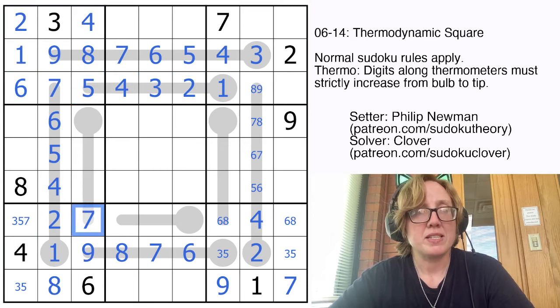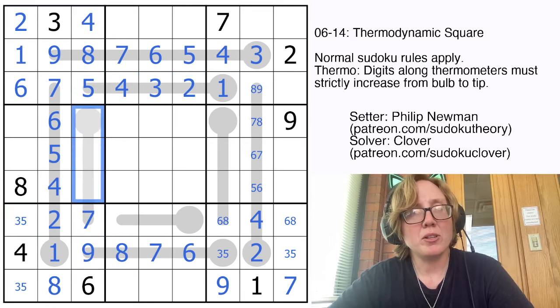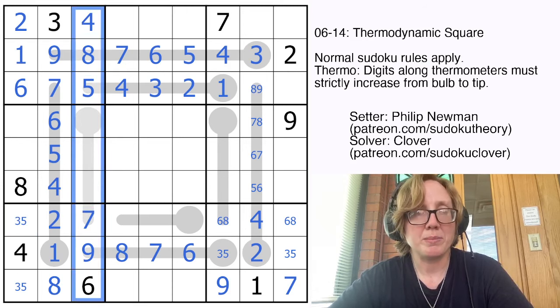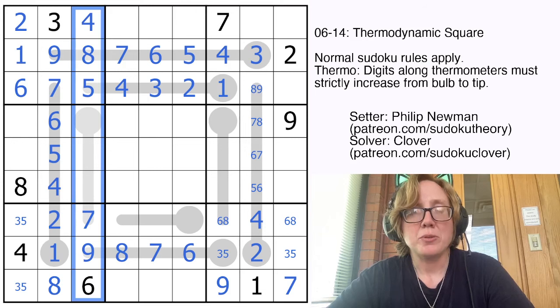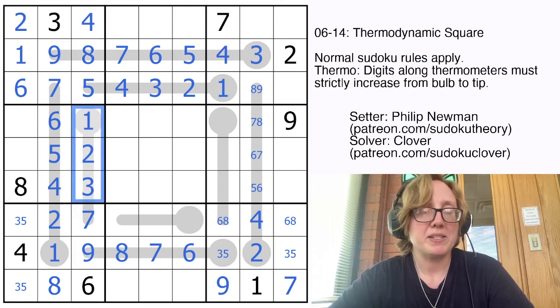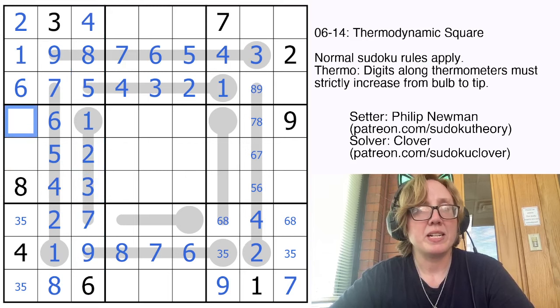This is a 5 now, which tells us this is a 7. And because all of our remaining cells that aren't known in this column are on the thermometer, we're down to no degrees of freedom and we can just pencil them in because we know what order they go in.